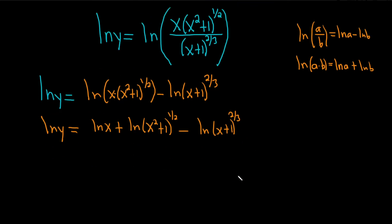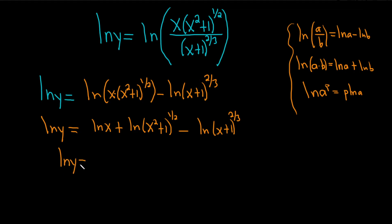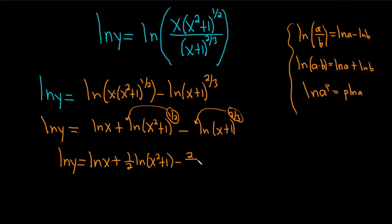The last step is to bring these exponents down. Whenever you have an exponent inside a log, you can put it in front — that's the power rule. It says the natural log of a to a power equals the power times the natural log of a. So we're using all three rules in this problem: quotient, product, and power. This gives us ln of y equals ln of x plus one-half times ln of x squared plus 1, minus two-thirds times ln of x plus 1.